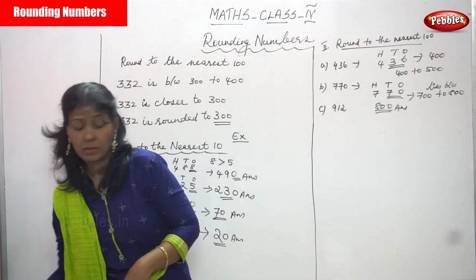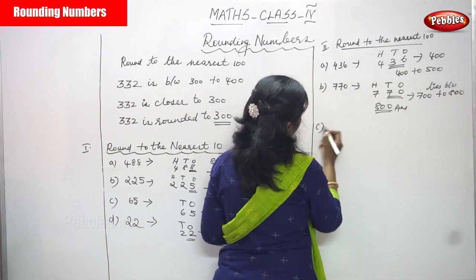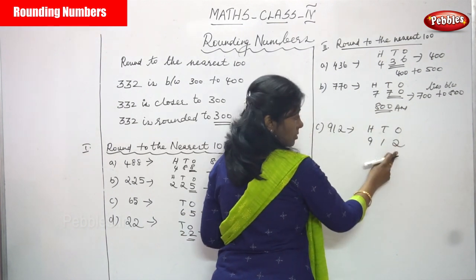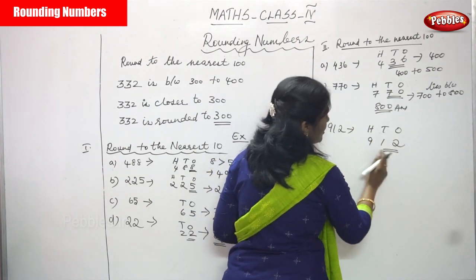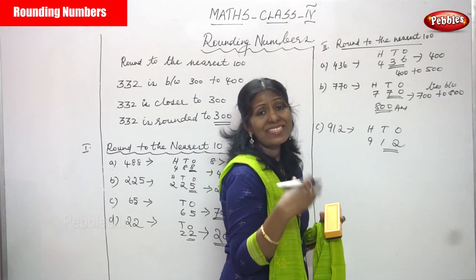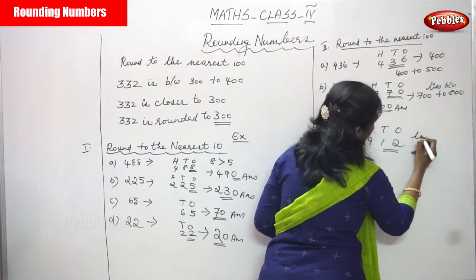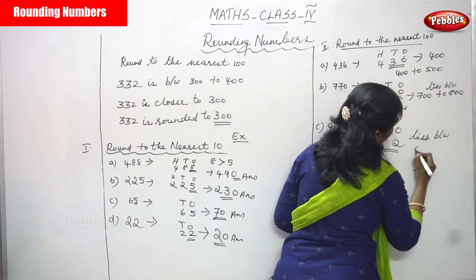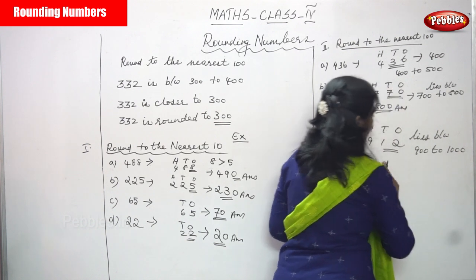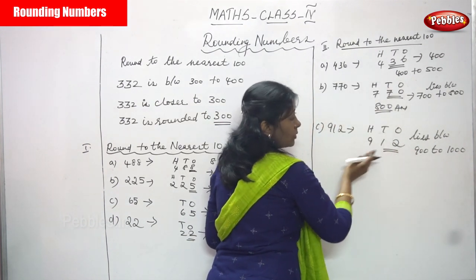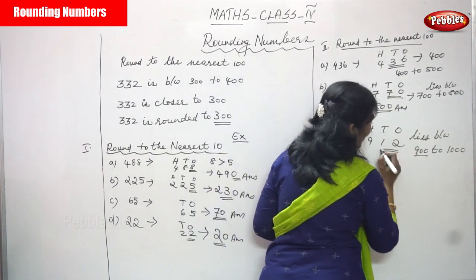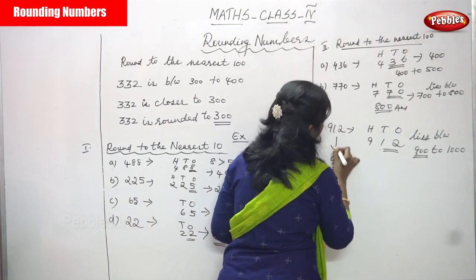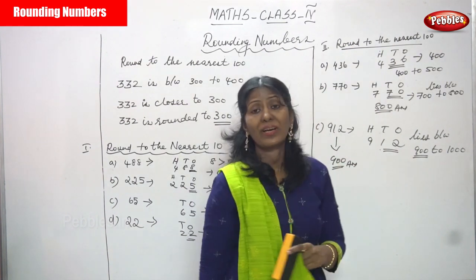The third question is 912. 1's place is 2 and 10's place is 1. Consider the last two digits: it is 12. 12 is less than 50. This number lies between 900 to 1000. Since 912 is less than 950, you go to the forward direction. 912 is closer to 900. So, nearest 100 value is 900. The answer is 900 — this is the round to the nearest 100.